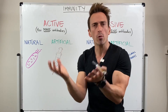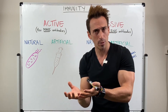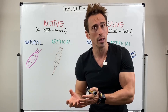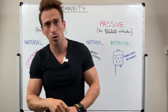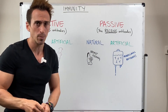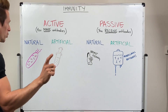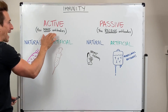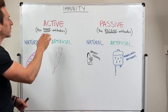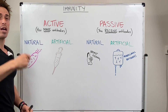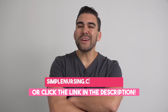This memory of antibodies that we develop is called immunity, and there are four different types of immunity that I want to go through with you. The first type is active immunity — where you make the antibodies yourself.